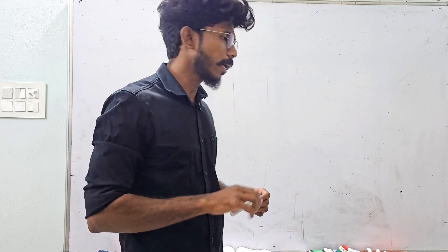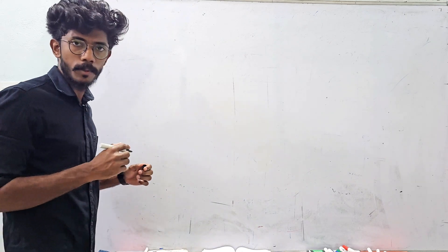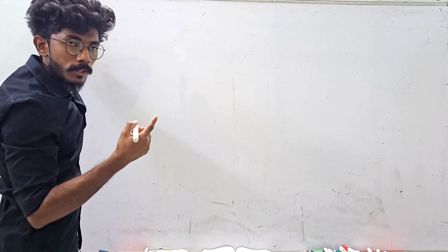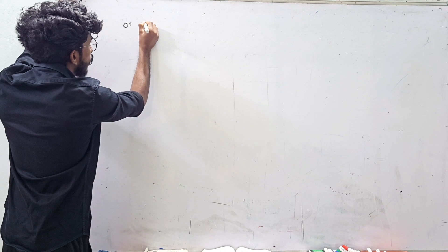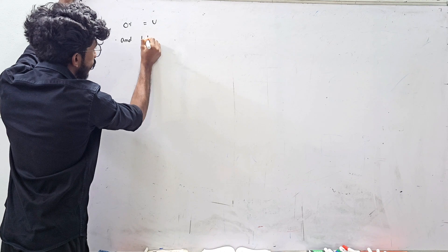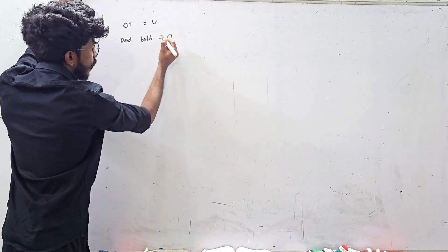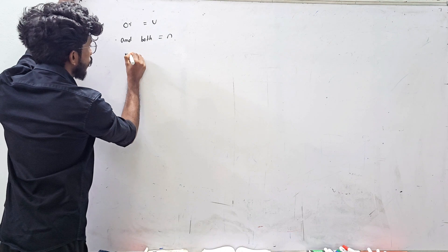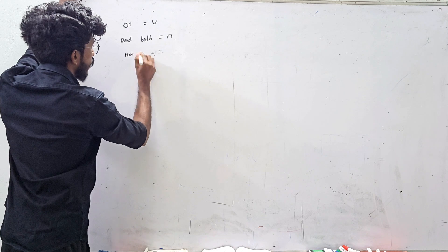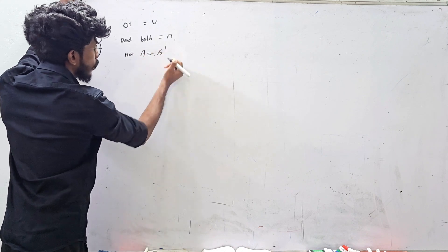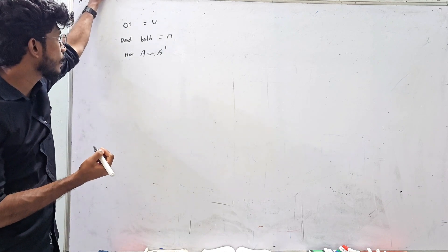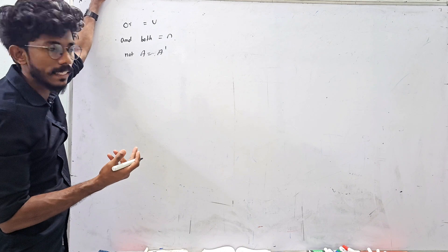I am going to ask you a few questions about probability. If you have a set, you have a probability. If you have 'or', you have a union. If you have 'and' or 'both', you have an intersection. 'Not' is a complement. So 'or' is a union and 'both' is an intersection, and 'not' is a complement.